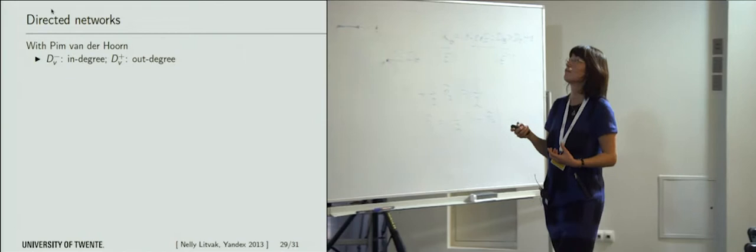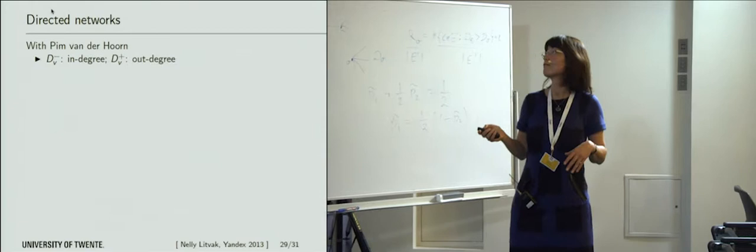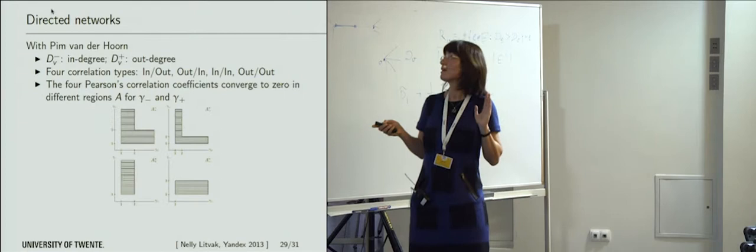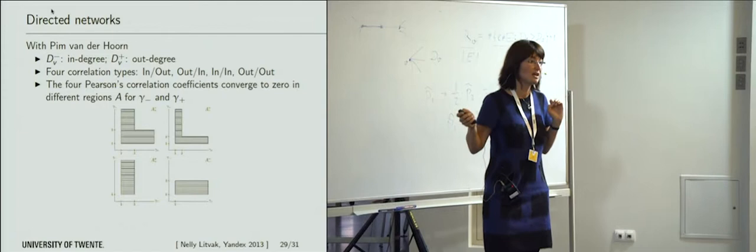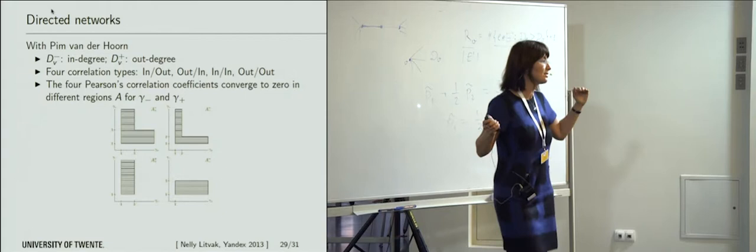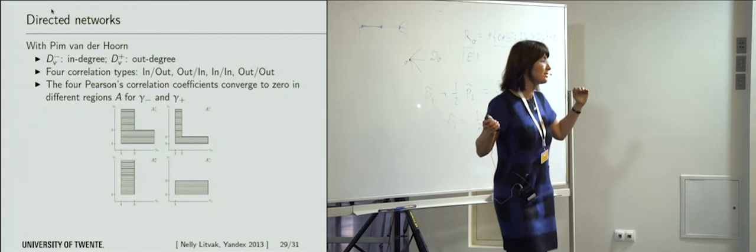This work continues. I have a student who is also analyzing this for directed networks. In directed networks you have four different types of correlations, and for all four you have different behaviors — different regions of the power exponent where your correlation will converge to a non-negative number. This is natural because in the directed scenario, for instance, the correlation between out-degree here and in-degree there involves this edge participating in both. But correlation between in-degree here and in-degree there involves this edge in one but not the other. We also came up with an example where Pearson converges to plus one and Spearman converges to minus one — they can totally disagree.